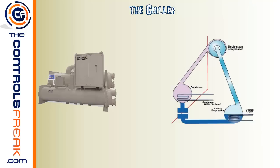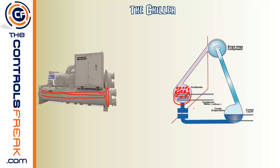On the evaporator side, we have water lines as well. These water lines run into the building through the coils inside the air handler units, essentially the air conditioning units inside the building. One other thing to note: inside these barrels, the water lines you see are actually long tubes that run the full length of the barrel. I've seen chiller barrels with literally 100 or more tubes inside. That's where you get the water running back and forth to do the heat transfer.